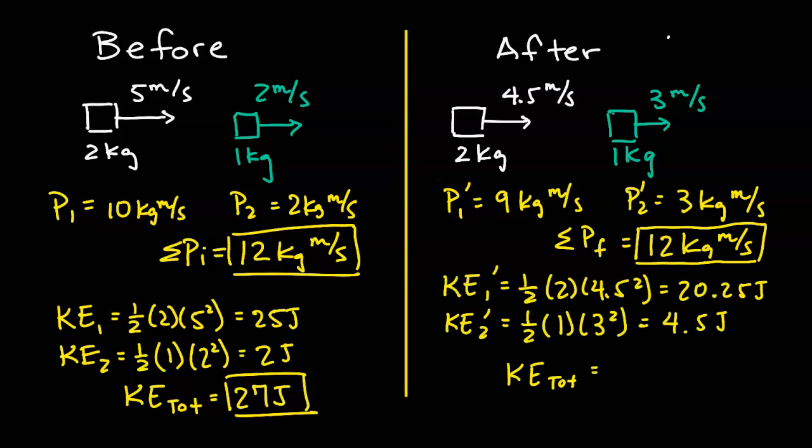Now let's take a look at energy. After the collision, object 1 has a kinetic energy of 20.25 joules and object 2 has a kinetic energy of 4.5 joules. Adding those up, we get 24.75 joules of energy after the collision. We can see there is some kinetic energy loss — some of this energy was transformed into sound, and some could have been transformed into heat. The materials of the objects could also be different from scenario 1. Since there is some loss of kinetic energy and the objects bounce off each other, this is referred to as an inelastic collision.